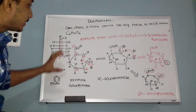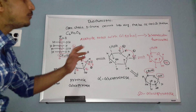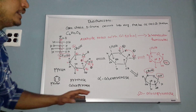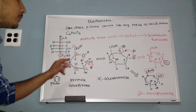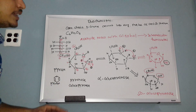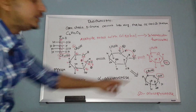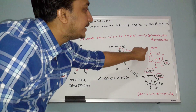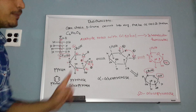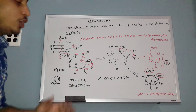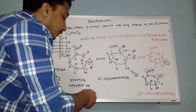So from open chain D-glucose converting into the ring, we get two possible structures. If carbon number one's OH and carbon number six's CH2OH are on the same side — that is beta structure. If they are on opposite sides — that is alpha structure. In this structure, OH at C1 is in the down position and CH2OH at C6 is in the up position — they are opposite, so this is alpha glucopyranose.